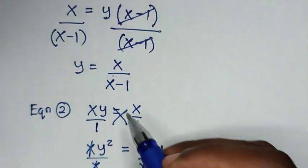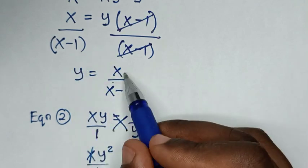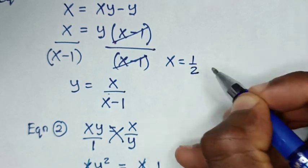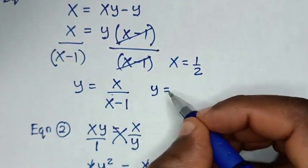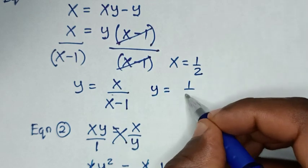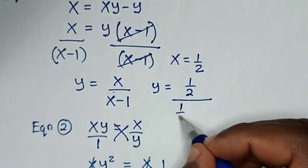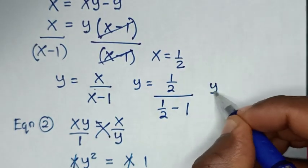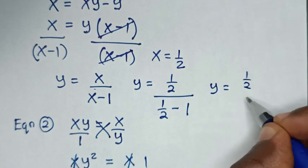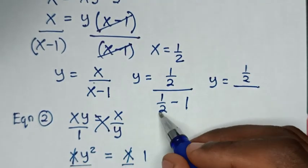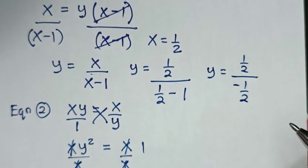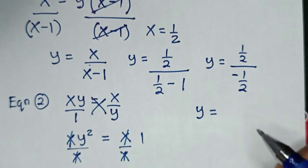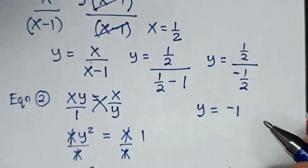Now we already have x equal to one half. Substituting into y equal to x over (x minus 1): y equals (1/2) over (1/2 minus 1), which is (1/2) over (negative 1/2), so y equals negative 1.